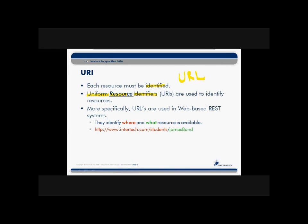In the RESTful web services paradigm, we need to uniquely identify documents and specify how to get information about an order or a book. URLs — those more specific URIs in web-based RESTful systems — help identify not only what we're interested in, but also where it can be found. For example, here's a RESTful request: please give me the student James Bond information — the state about the resource called James Bond. It contains information about what we're interested in, James Bond, and where to find it — at intertech.com/students. You're already familiar with a lot of things in the RESTful web service world.